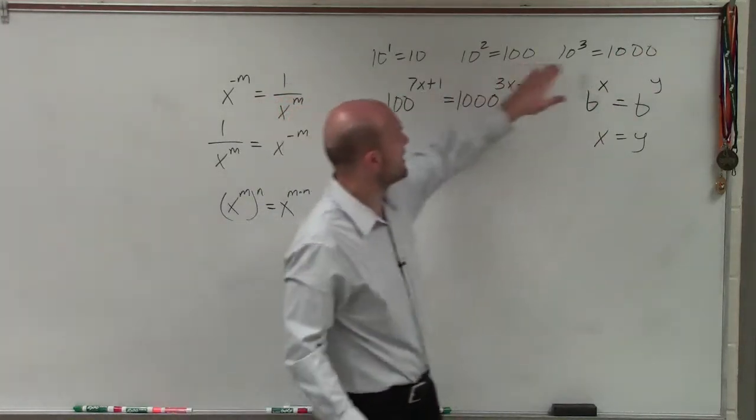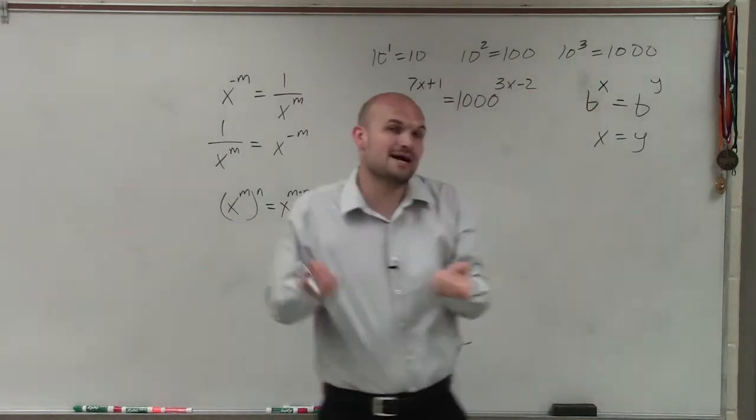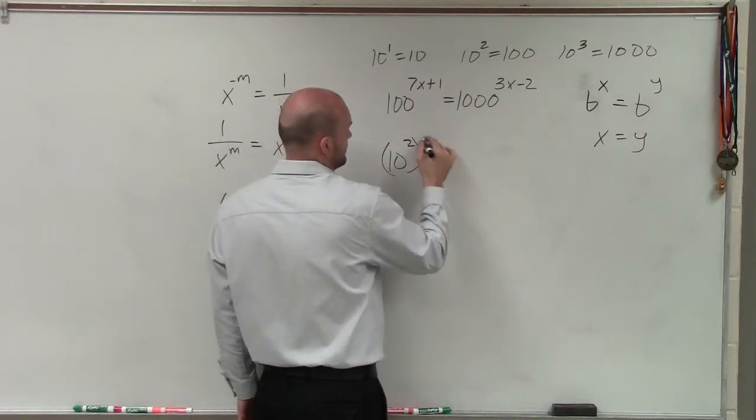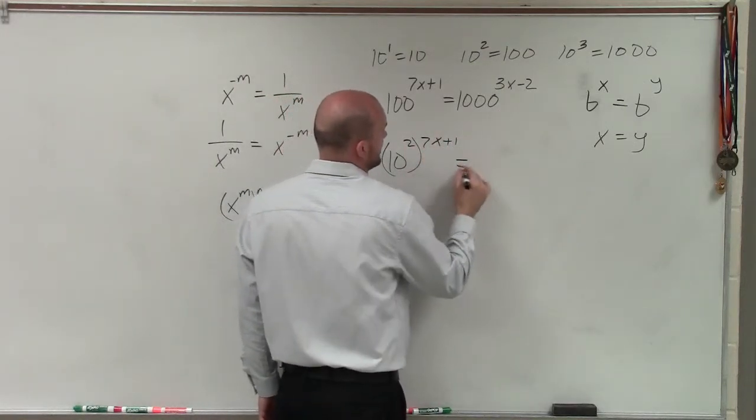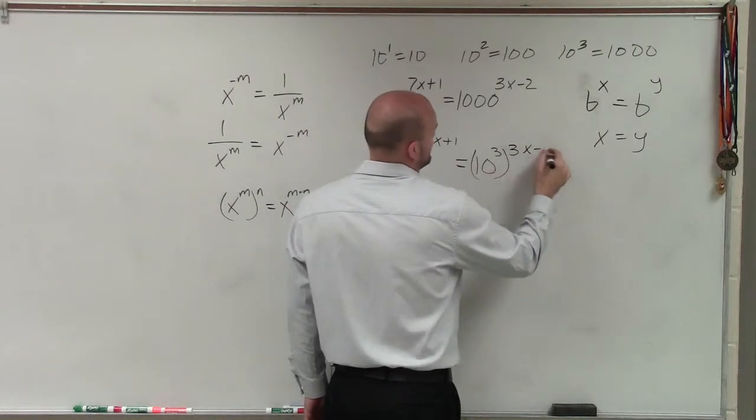So therefore, if you notice, if I rewrite 100 as 10 squared and 1,000 as 10 cubed, I'm using the same base of 10. So it's going to be 10 squared raised to the 7x plus 1 equals 10 cubed raised to the 3x minus 2.